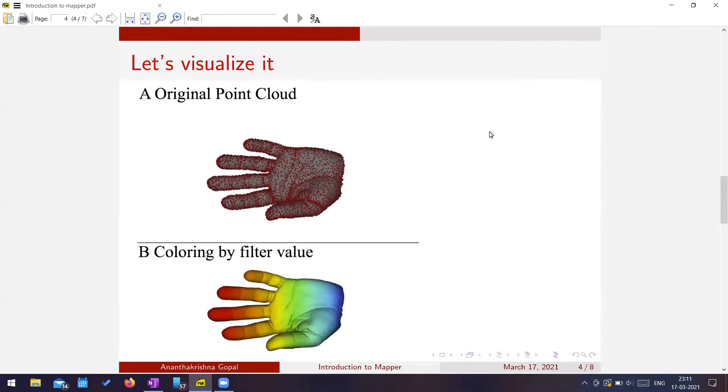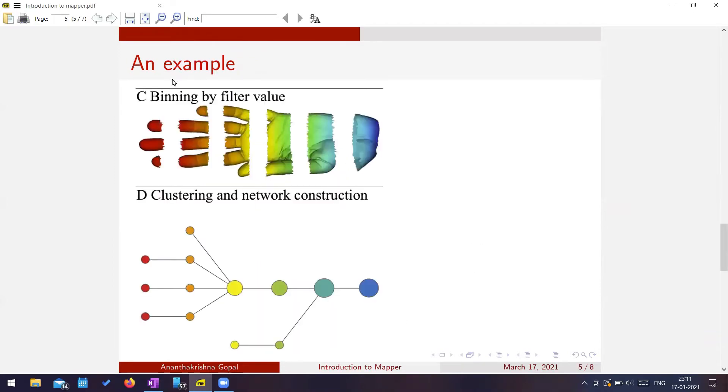So before that, let's just see it once. So I have a point cloud, I colored it by some filtering, that's my lens, then I binned it and then I clustered it. This is sort of what we will be doing. Let's go forward.